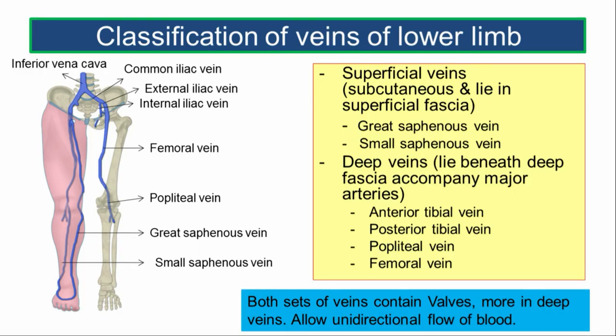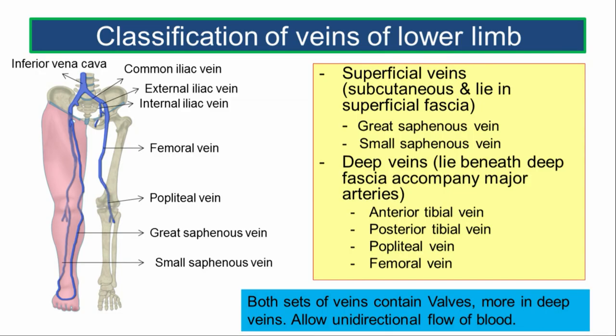Examples of deep veins include the anterior tibial vein, posterior tibial vein, popliteal vein, and femoral vein. Both sets of veins contain valves. More valves are seen in the deep veins as compared to the superficial veins, and these valves allow unidirectional flow of blood.